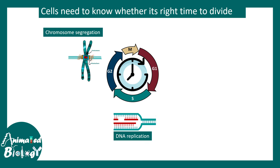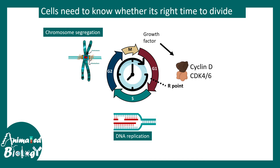Whether to divide or not is a critical decision for a cell, as it is energy dependent. Processes like DNA replication in S phase and chromosome segregation in M phase require a lot of energy, so if nutrients are not present it is not an appropriate time to divide. There is a particular point known as the restriction point where cyclin D-CDK4 takes a critical decision, integrating information from growth factor signaling, nutrient availability, and stress factors to decide whether the cell should cross the restriction point. If crossed, the cell must divide.